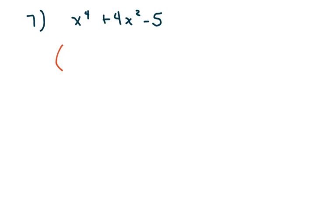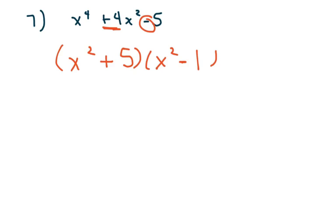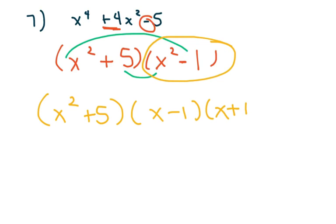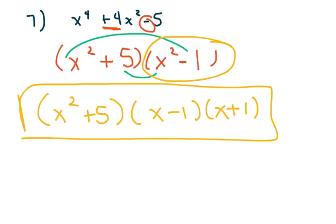Here's another one — this is pretty easy. x squared times x squared. This one's negative, so one's positive and one's negative. It's going to be 5 and 1. I'm going to let my 5 be positive, because this middle term is positive. Go ahead and check: 5 minus 1 is 4, and we have it. But I can factor this more — we're going to get x squared plus 5, and this part is a difference of squares: x minus 1 times x plus 1. That's your answer.